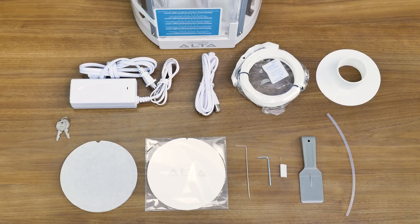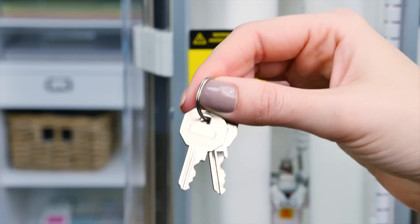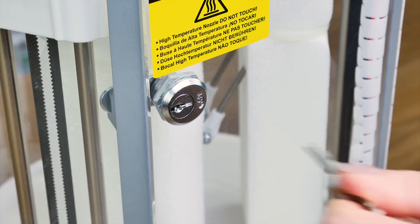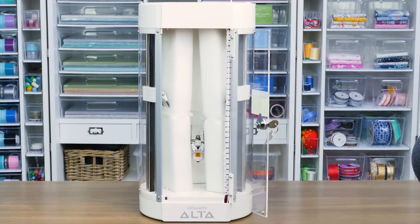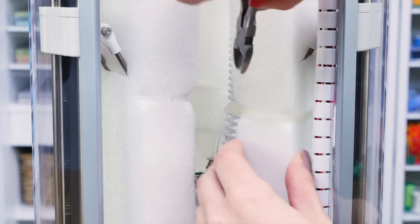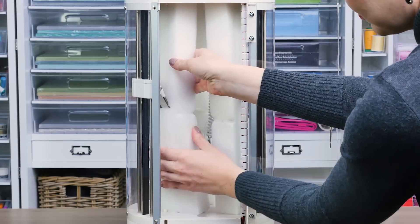Once you've confirmed all items are present, discard any tape. Cut any ties that are holding the foam pieces in place and remove the foam pieces from the machine.